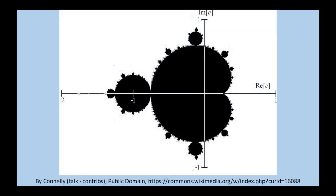Here is a more mathematical depiction of the set borrowed from Wikipedia. The horizontal axis represents the real portion of the number, while the vertical axis represents the imaginary portion. Any black point represents a number that's part of the set, while the white points are not part of the set. So naturally, there are two questions that probably come to mind: how do you determine if a number is part of the set, and why do so many Mandelbrot depictions have so many colors if the reality is really just black and white?